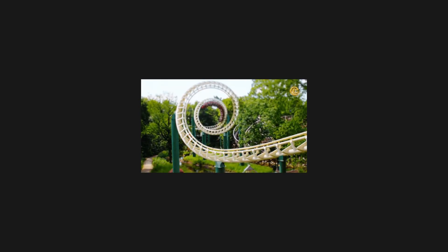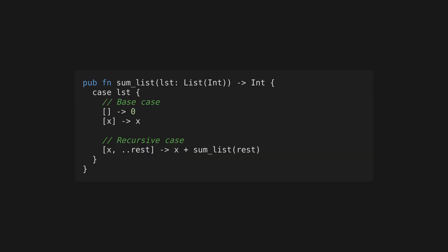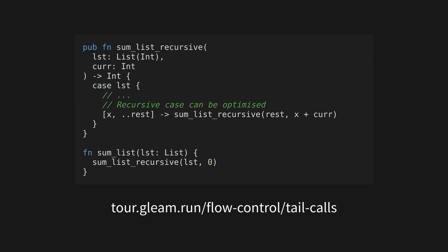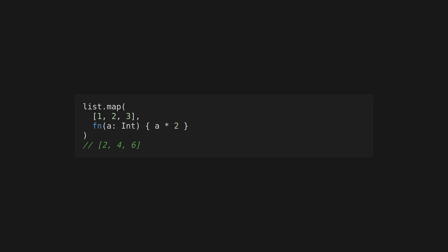Gleam doesn't support looping like many other languages — iteration is done instead through recursion. Gleam has built-in tail call optimization and will automatically apply optimization strategies where it can. Many common list operations that require iteration are available in the Gleam list module of the standard library, such as map, filter, reduce, and each, along with more complex operations like permutations and chunk.